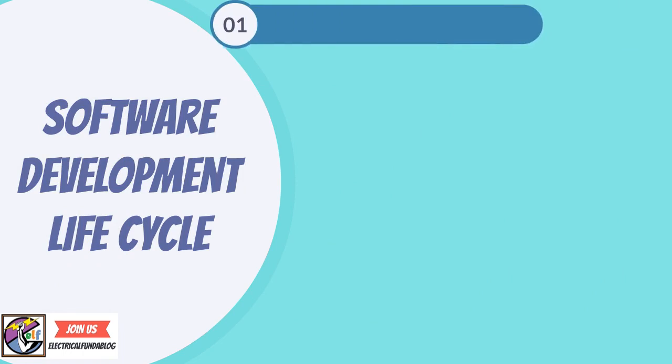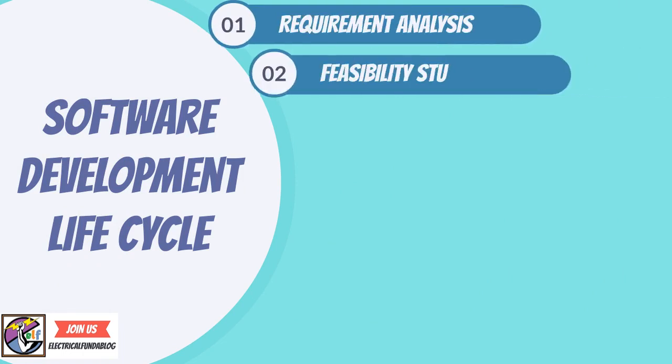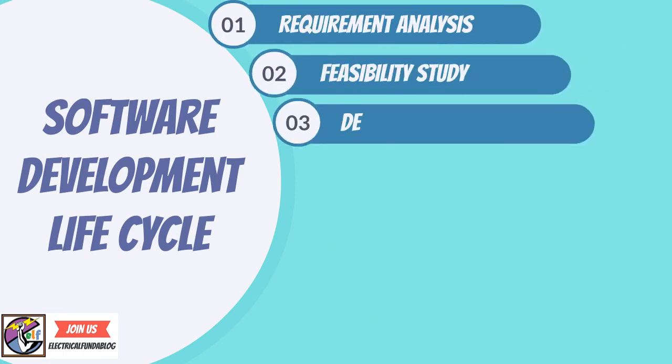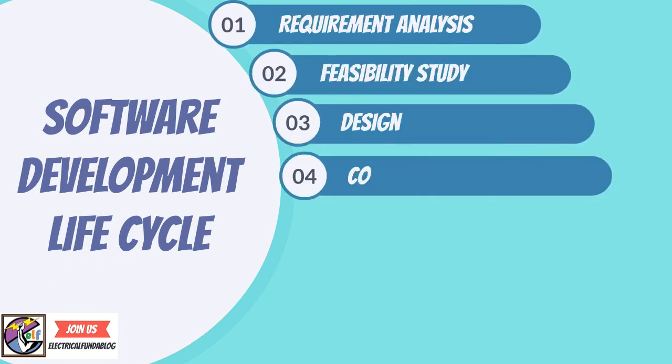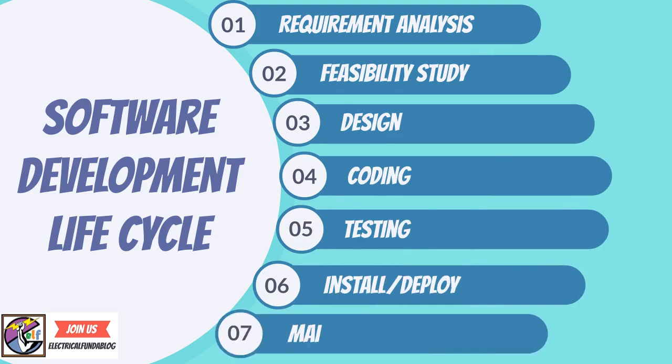The seven phases are: Requirement Analysis, Feasibility Study, Design, Coding, Testing, Deploy, and Maintenance. Each phase of the SDLC life cycle has its own process and deliverables that feed into the next phase.